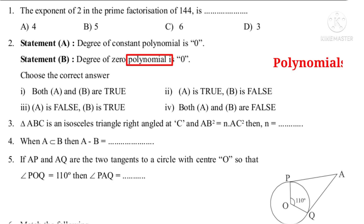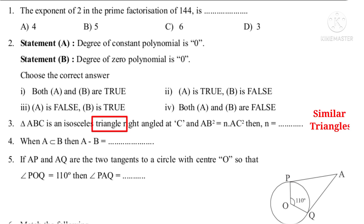Question 3: Triangle ABC is an isosceles triangle right angled at C, and AB² is equal to N into AC². Then N is equal to dash. This is a question from the chapter Similar Triangles. Question 4: When A is a subset of B, then A minus B is equal to dash. This is a question from the chapter Sets.